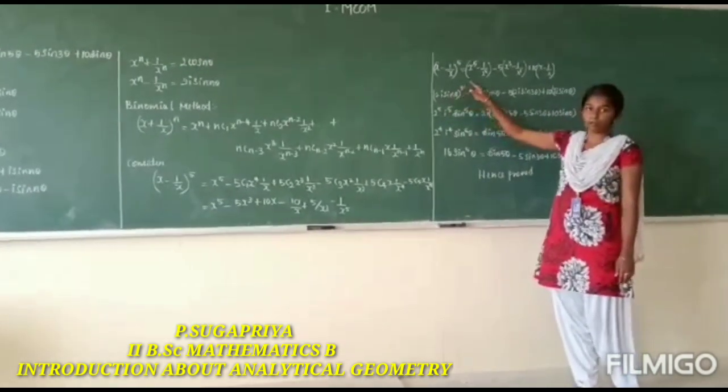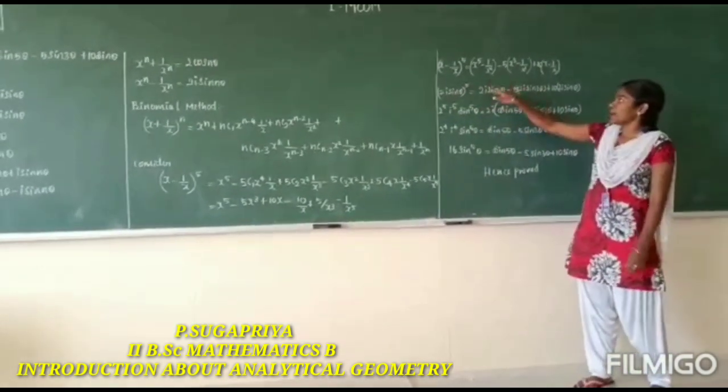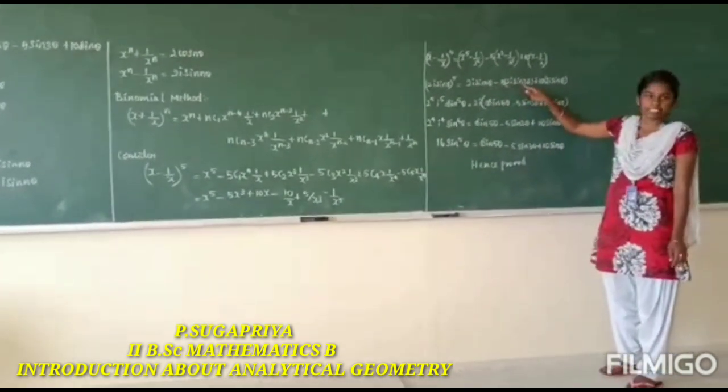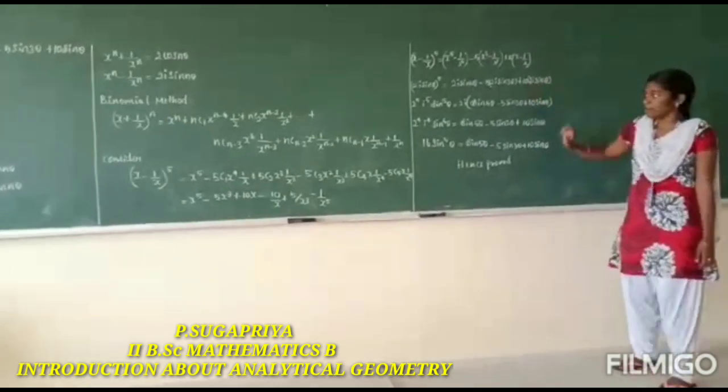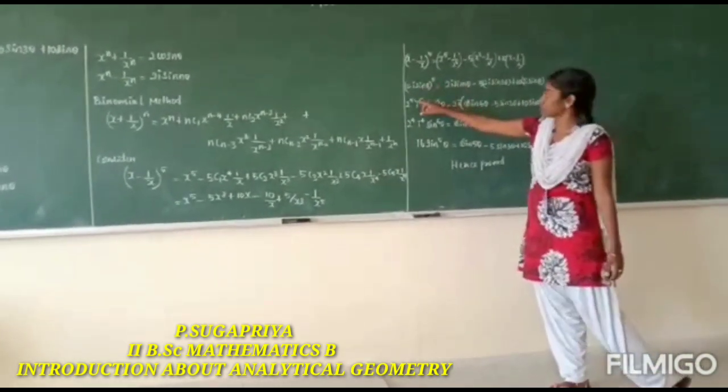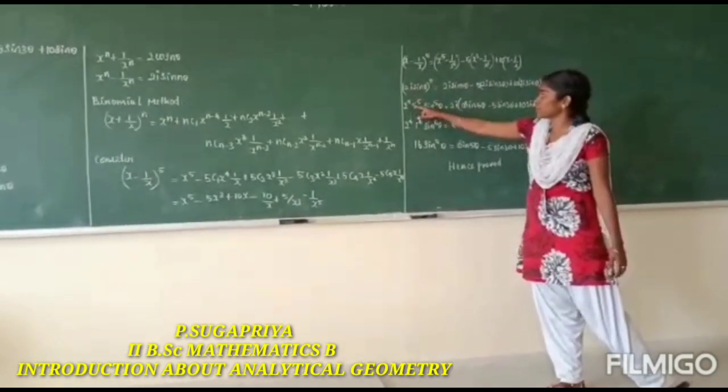We get (2i sin theta)^5 equals 2i sin 5 theta minus 5 times (2i sin 3 theta)^3 plus 10 times 2i sin theta. Then we substitute 2^4 times 2, we get 2^5.